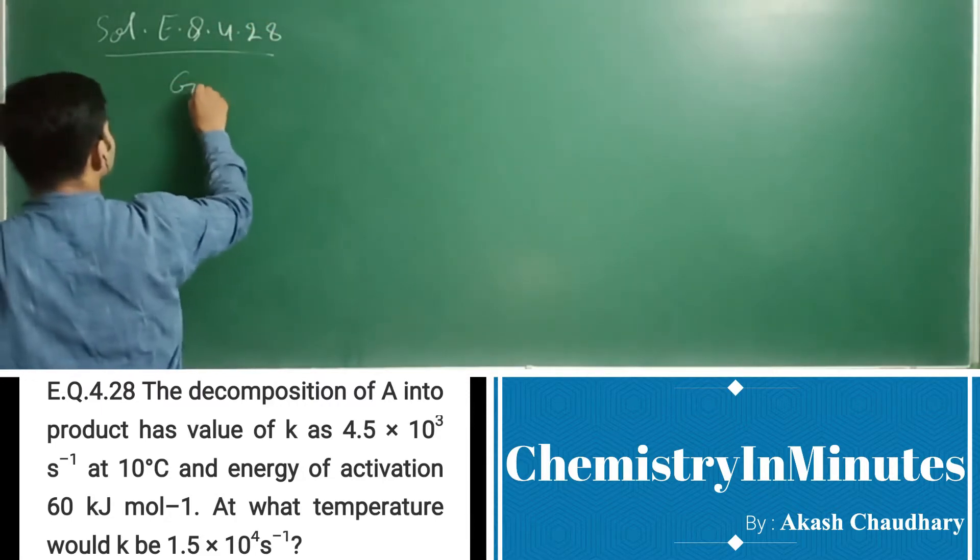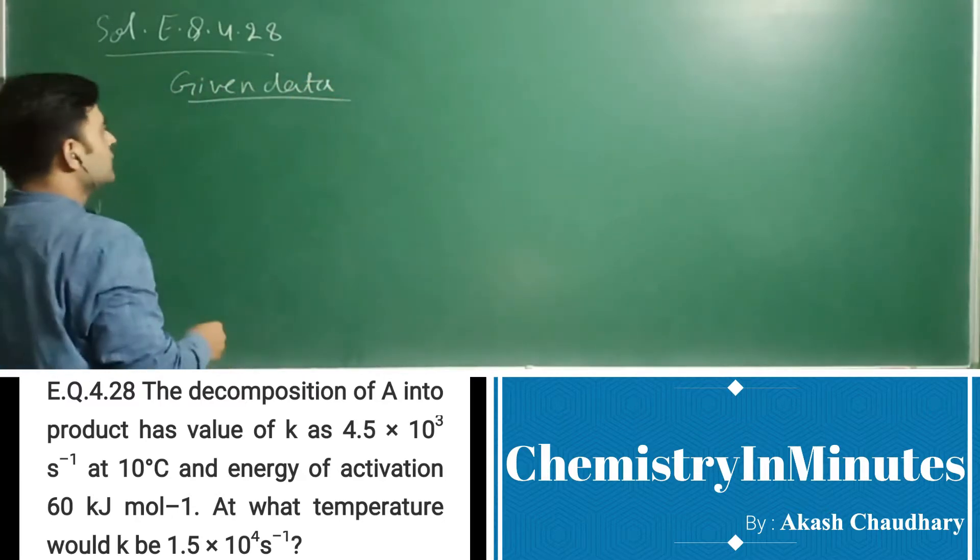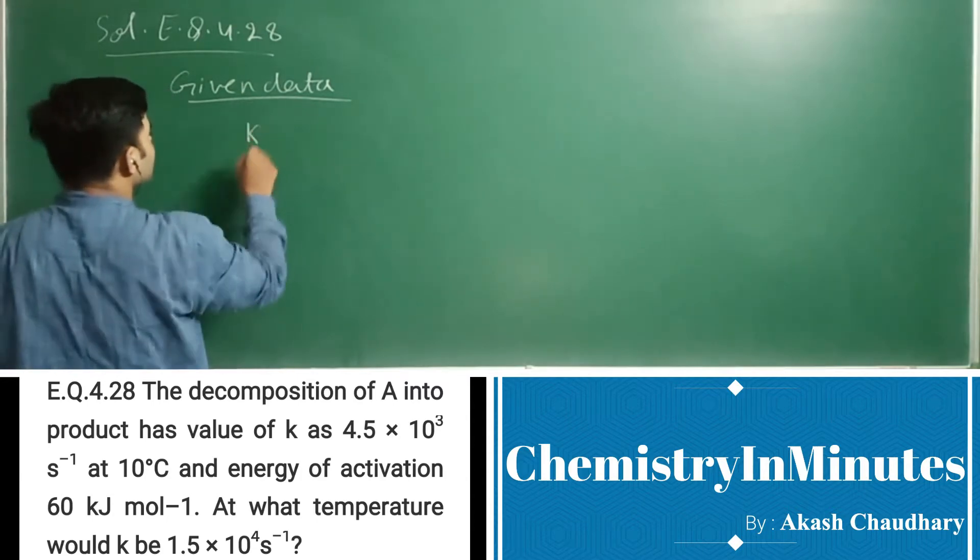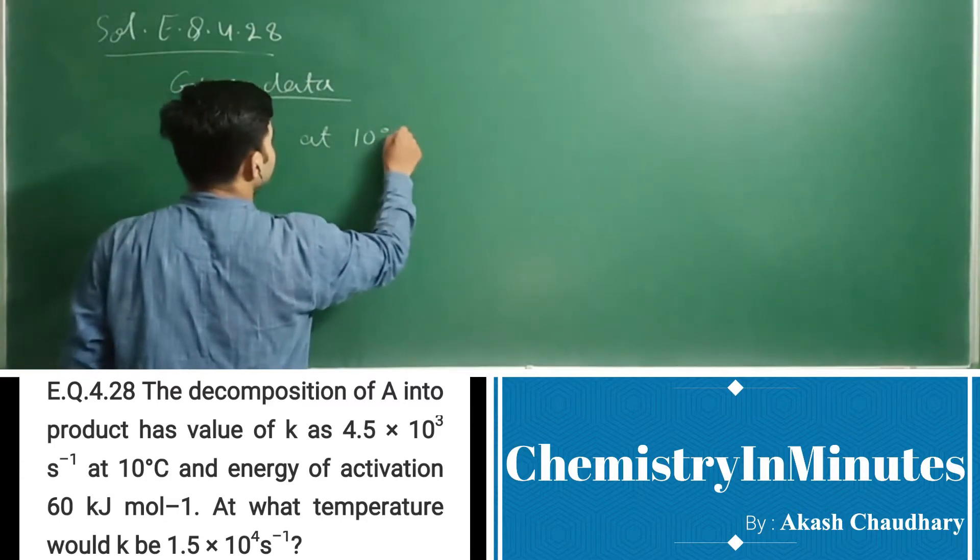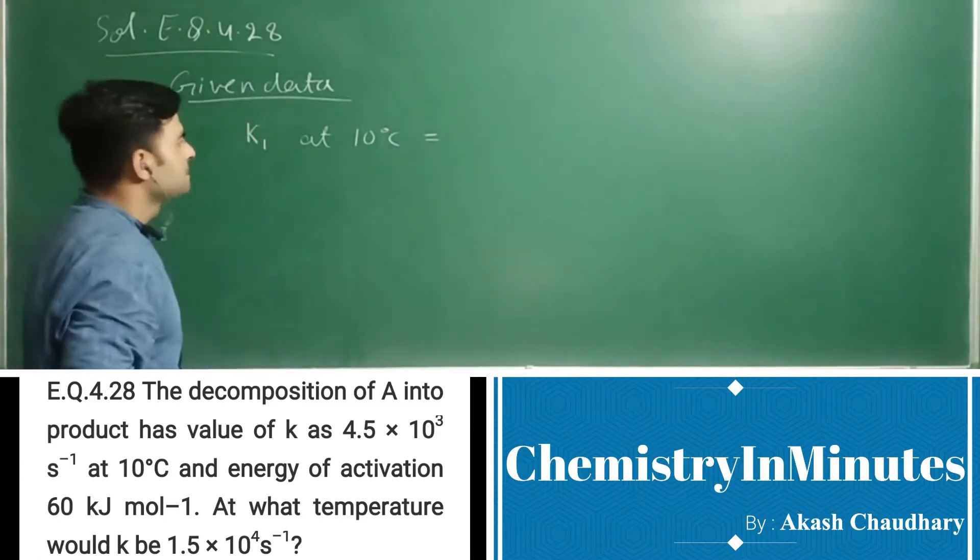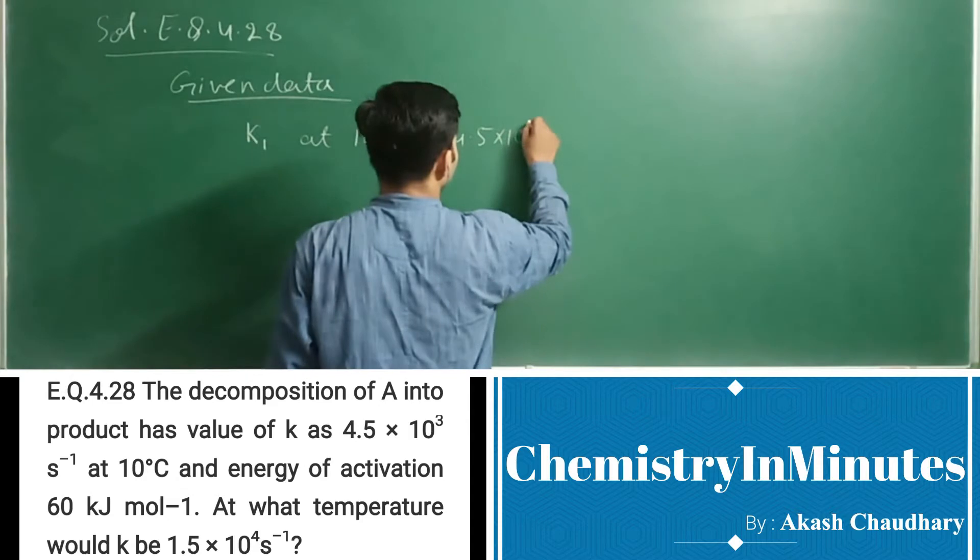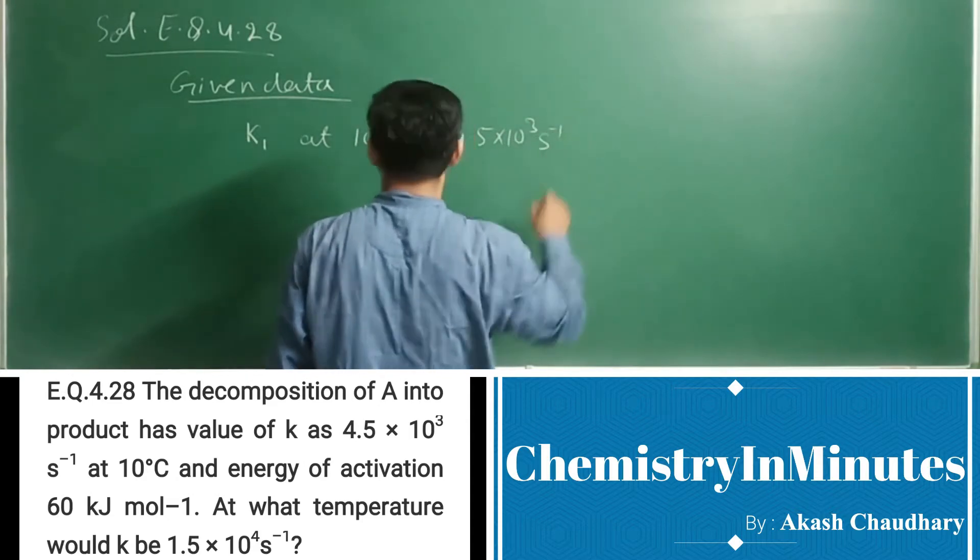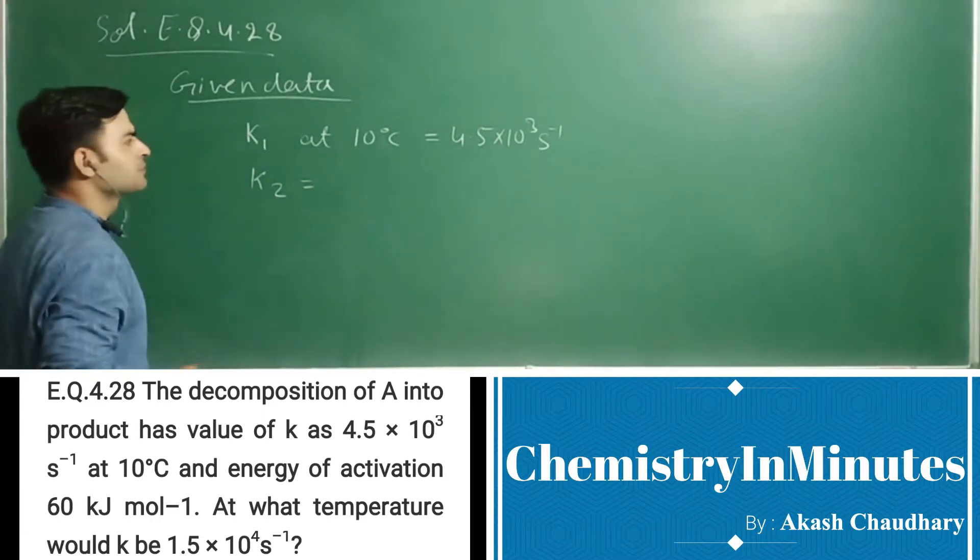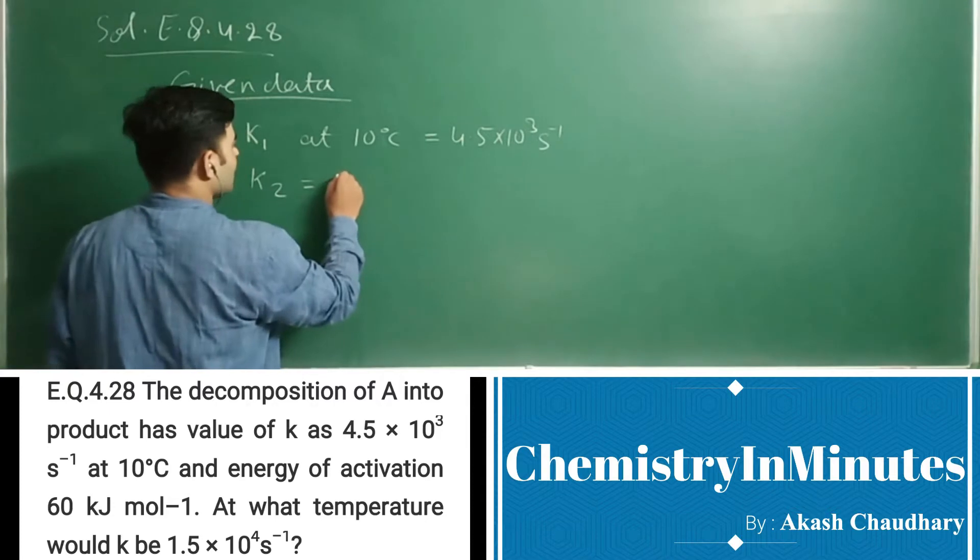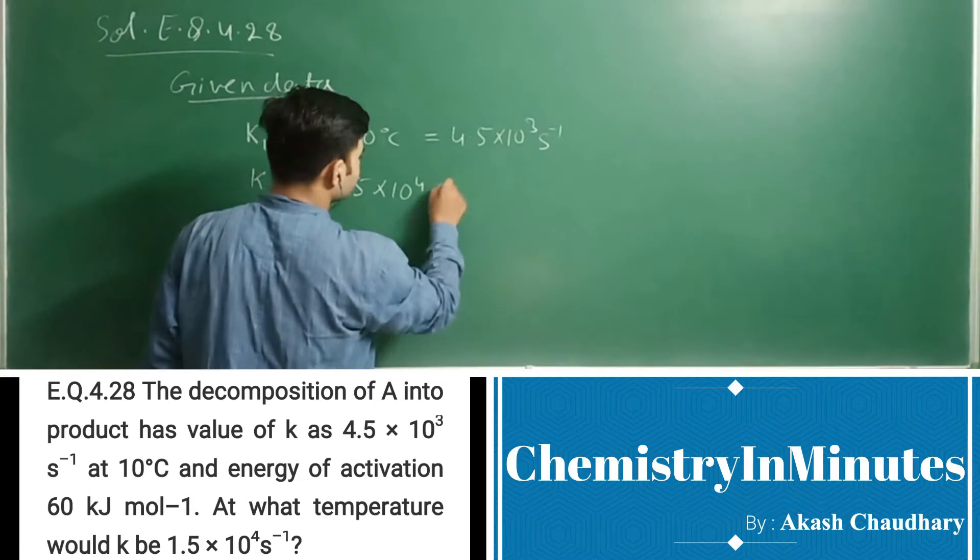First we'll write the given data. K1 at 10°C equals 4.5×10^3 s^-1. K2 equals 1.5×10^4 s^-1.